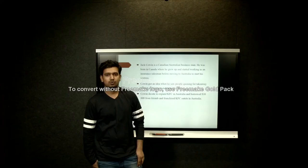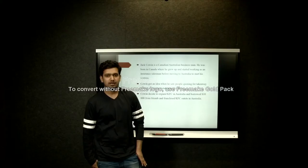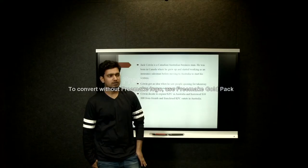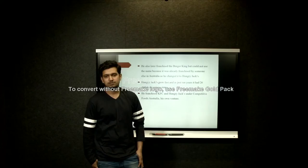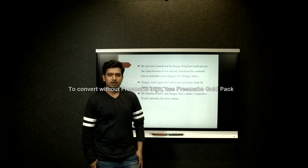Covent got an idea when he saw people queuing for take-away food at a Chinese restaurant in Sydney. Covent decided to expand KFC in Australia and borrowed $10,000 from a friend and franchised a KFC outlet in Australia. He also later franchised Burger King, but he could not use the name because it was already franchised by someone else in Australia, so he changed it to Hungry Jacks.